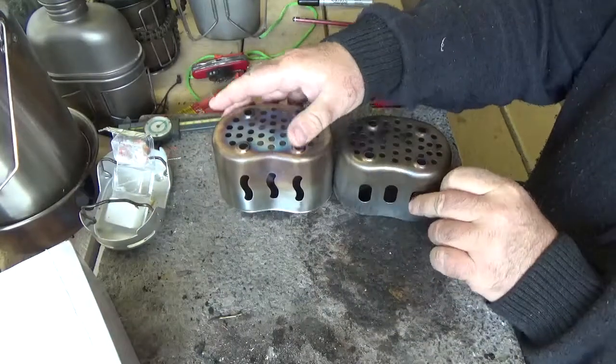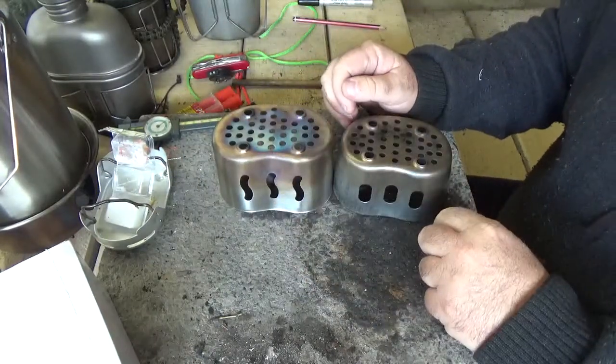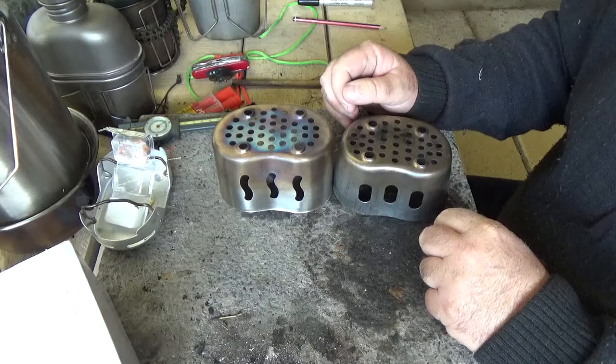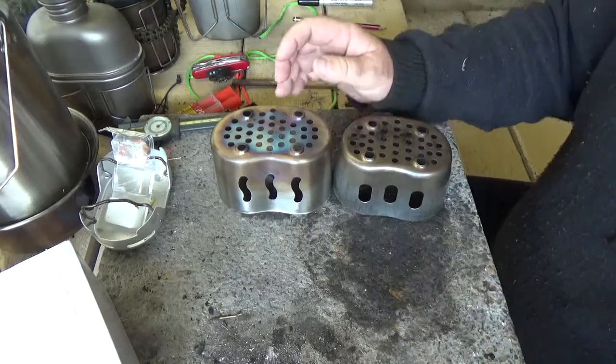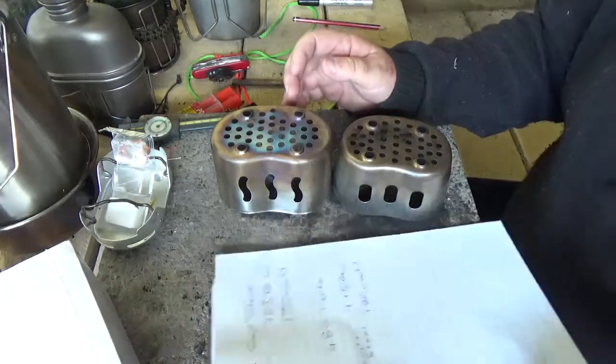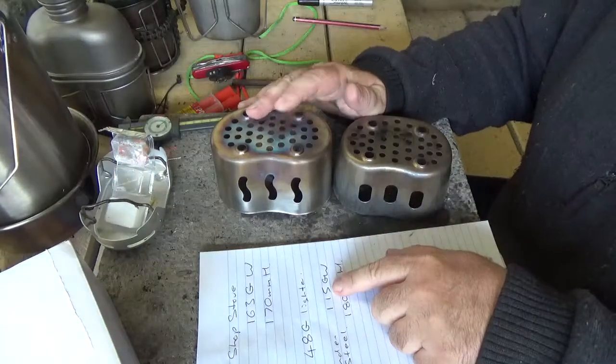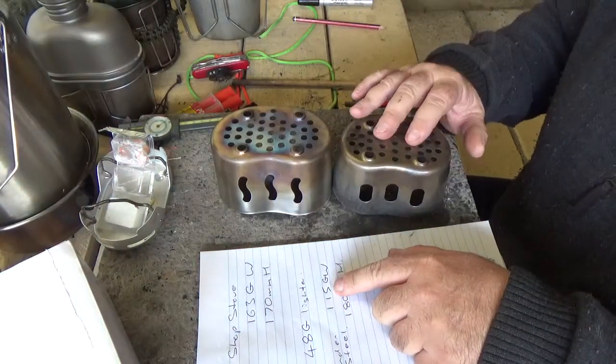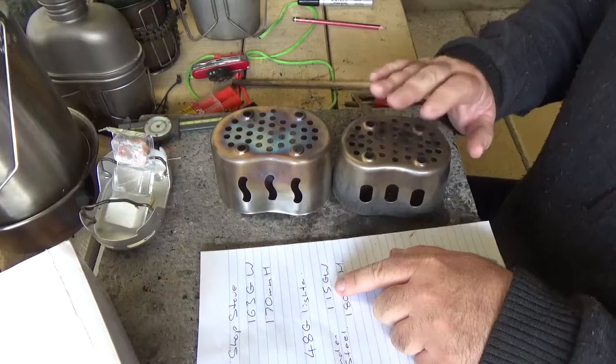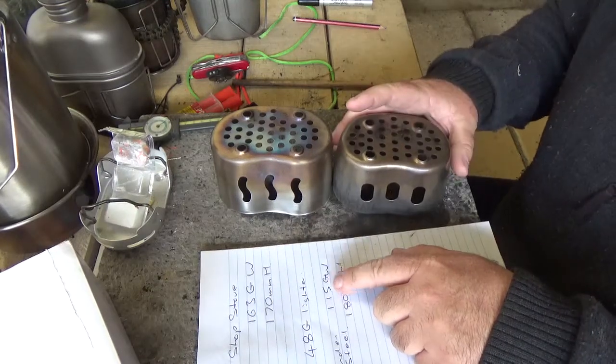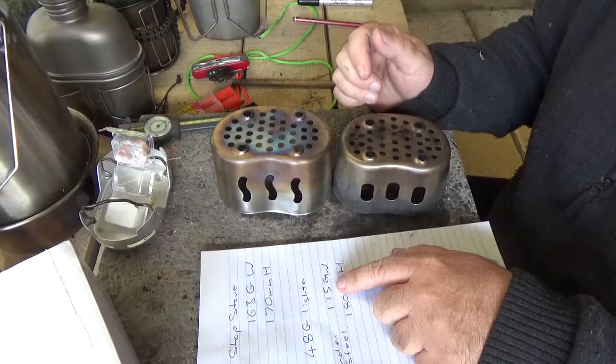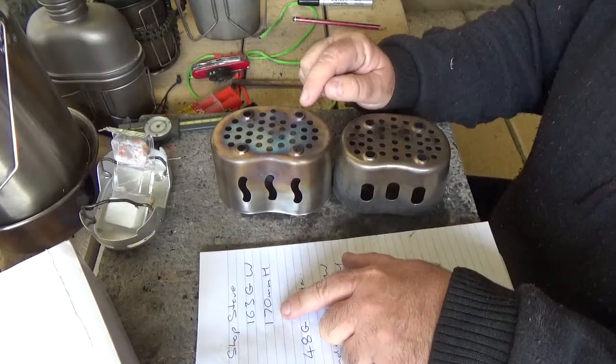Probably the only noticeable differences are the cutouts on the inside of the curve. This Dromo Lander is 115 grams, so it's 48 grams lighter than the canteen shop stove. This is the original one, so I think the new one they have is lighter as well.